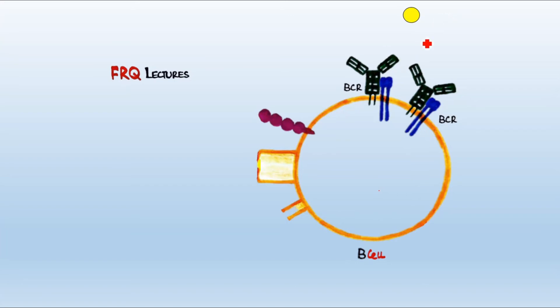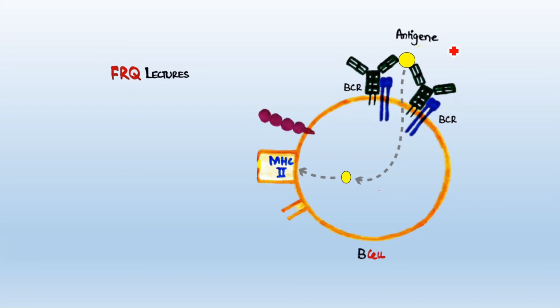The surface antibodies interact with the invading pathogen, recognize it, and the B cell engulfs it. After engulfing, the antigen is broken down into fragments — just like a macrophage breaks down a pathogen. The same procedure repeats: the antigen is broken into small fragments, and one peptide fragment is loaded onto the MHC2 complex. The B cell is also an APC, just like the macrophage, presenting the fragment on its MHC receptor.